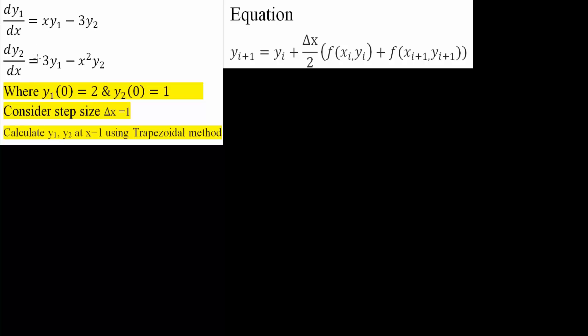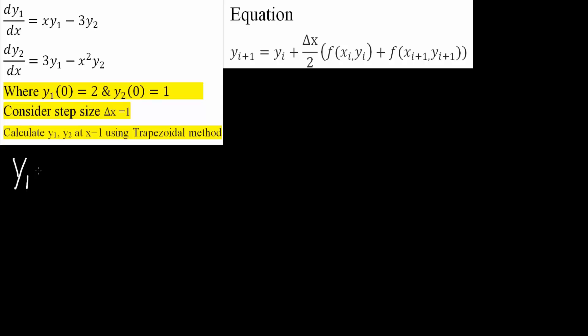We have two equations here — dy1 and dy2. When we solve this problem, we will have two equations. The first one is y1(1); we want to solve the value of y1 when x is equal to 1. Using this formula with i equal to 0, we get y1(1). We know the value of y when x is equal to 0: y1(0) is 2, so y1 would be 2.